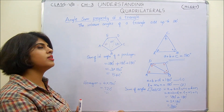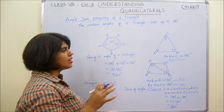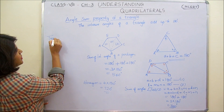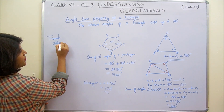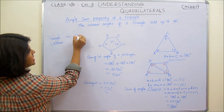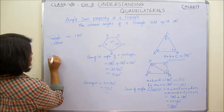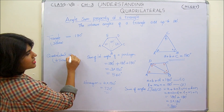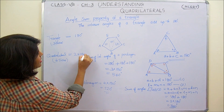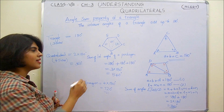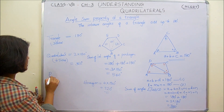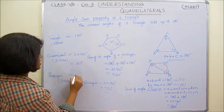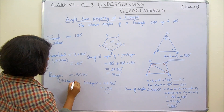In this way we can find the sum of interior angles of all polygons. Can you see a relation? In the case of a triangle, which is a three-sided figure, the sum is 180 degrees. For a quadrilateral with 4 sides, it is 2 into 180 degrees, that is 360 degrees. For a pentagon with 5 sides, it is 3 into 180 degrees, which equals 540 degrees.